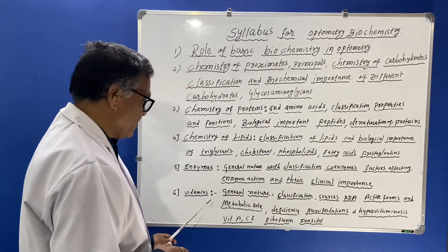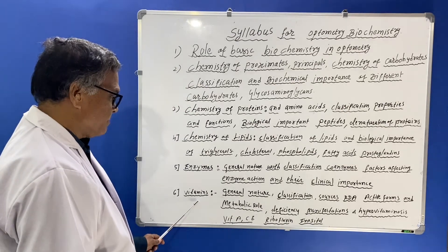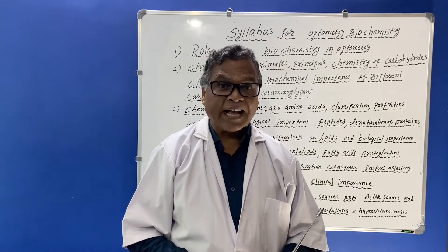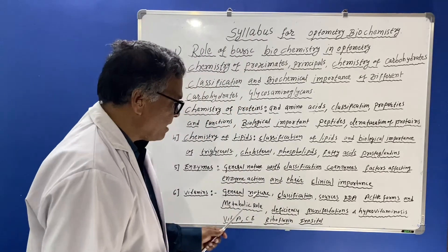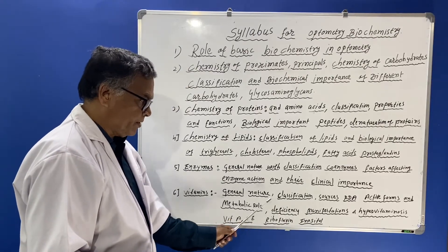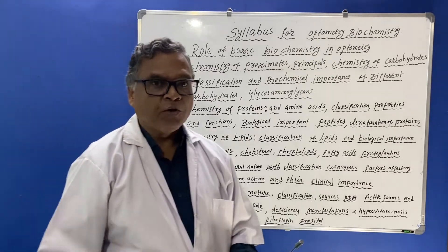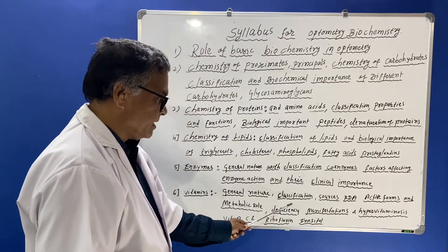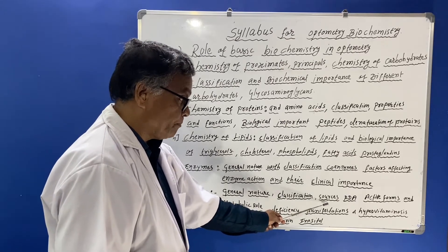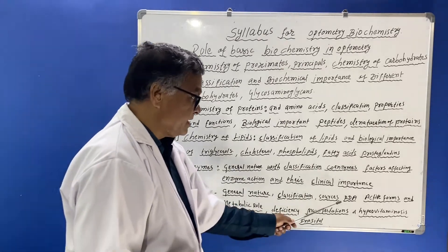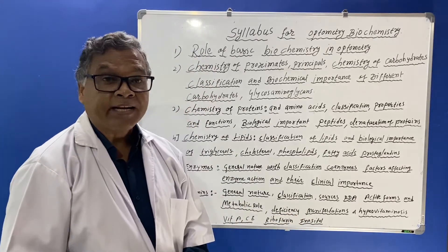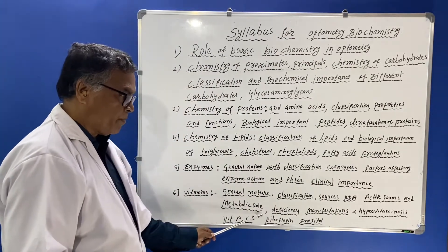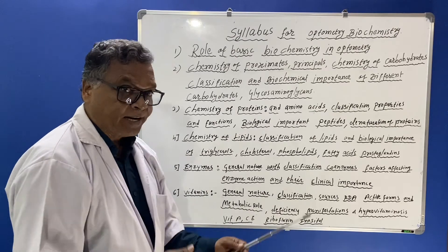The sixth chapter is vitamins. Vitamins are micronutrients. Under this chapter, you have to study the nature of vitamins — water-soluble and fat-soluble vitamins — including their classification, sources, RDA (recommended daily allowance), the active form of each vitamin, metabolic role, and deficiency manifestations.